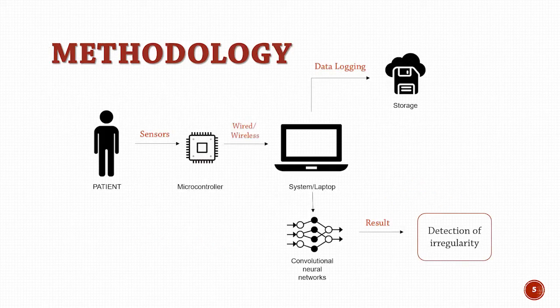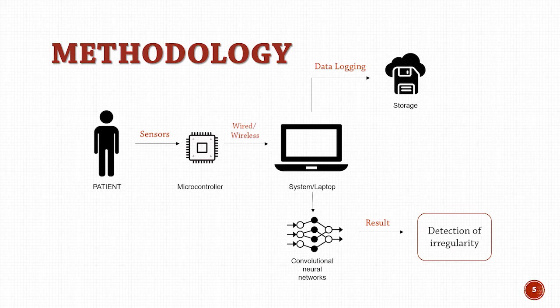Coming to the methodology of the project, it can be stated as follows. The ECG sensors are connected to the patient. These sensors send the ECG signals to the microcontroller which further sends it to the PC. The signal is processed. A copy of the data is made for storage and the original signal is given to the CNN model. The output of the CNN model tells us about any irregularity present in the user's heart. This is pictorially represented in the following process flow diagram.